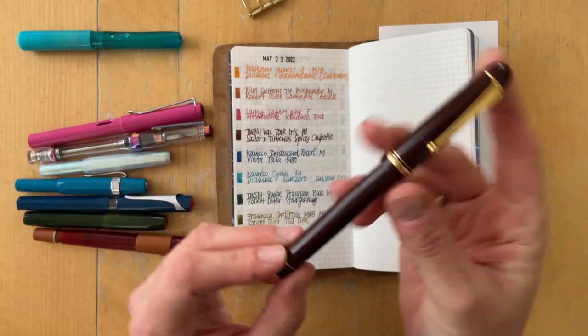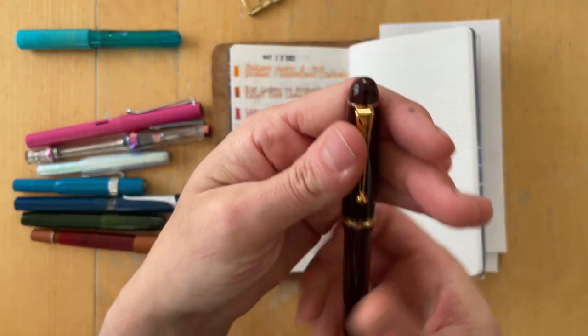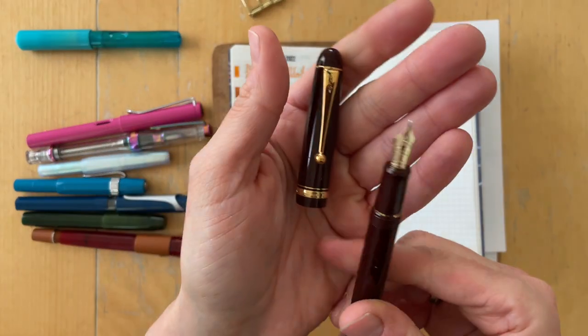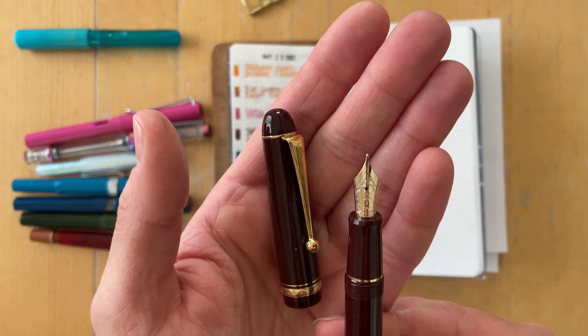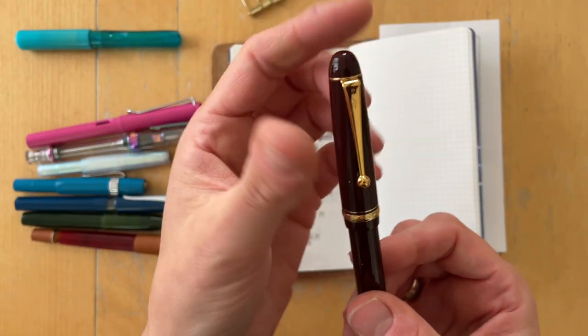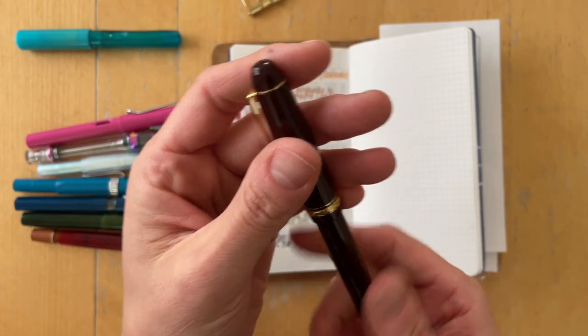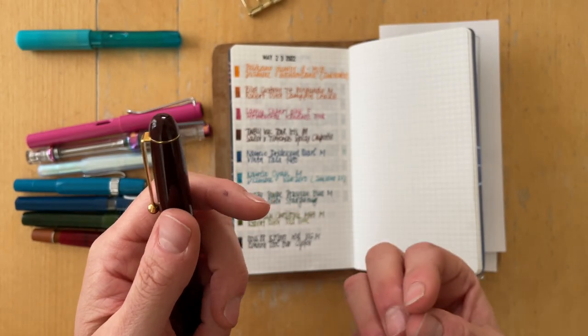The second pen that I had inked up was the Pilot Custom 74 in burgundy. It has an M nib. This is the only gold nibbed fountain pen that I own currently and it is one of my favorite pens to write with. It is super smooth and buttery. It's exactly how I like my pens.